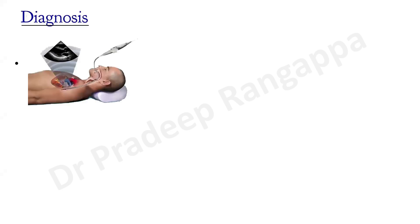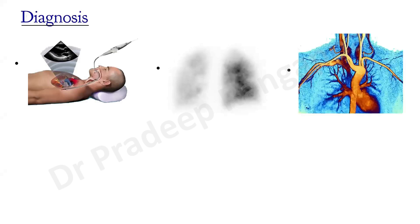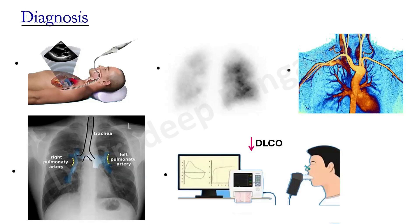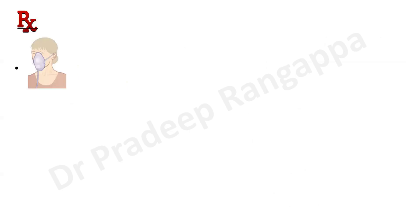Other diagnostic tools include transesophageal echo, which is superior to transthoracic in detecting the shunt. Radio-perfusion scan and pulmonary angiogram can also be considered, though many centers may not have these available. Chest X-ray may show adjunctive features: a prominent pulmonary bay and prominent pulmonary vessels due to dilatation of the pulmonary vasculature. Pulmonary function tests show reduced lung volumes and significantly reduced DLCO.